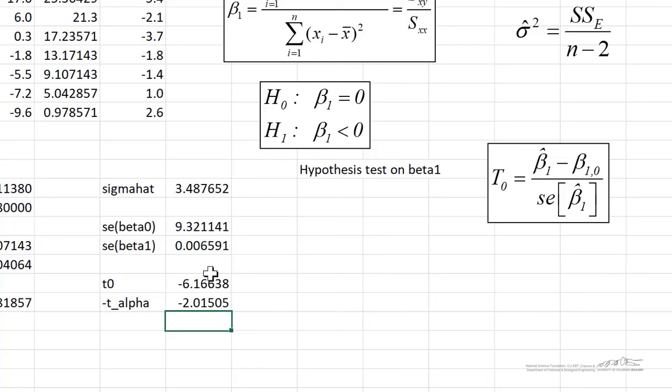The conclusion, because t naught for this lower tail test is way down in the tail, it's a lot less than our critical t_alpha of negative 2.01, our conclusion is that we accept the alternate and the slope really is less than zero. So the slope is significant.